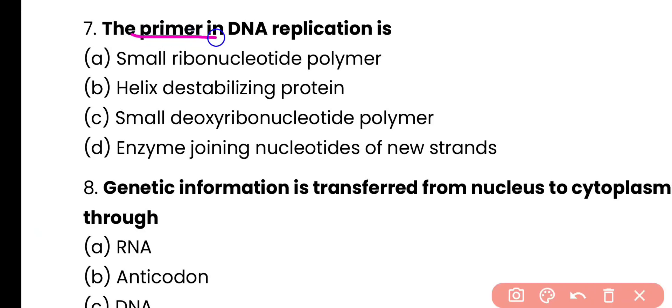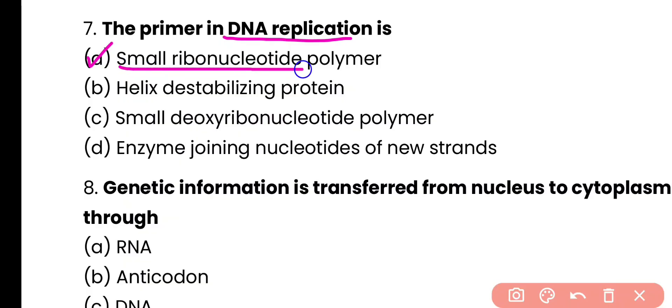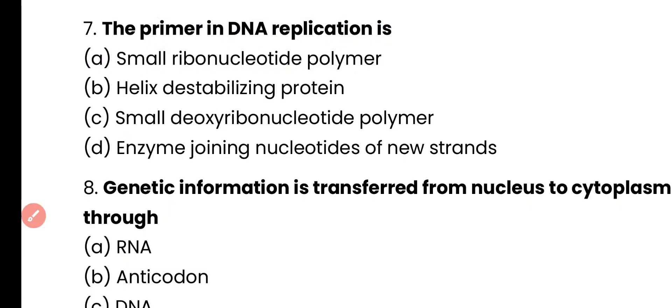Question number 7. The primer in DNA replication is: a small ribonucleotide polymer, helix destabilizing protein, small deoxyribonucleotide polymer, or an enzyme joining nucleotides of new strand? Correct answer is option A. The primer in DNA replication is a short stretch of small ribonucleotide polymer. It is also known as RNA primer and it is essential for the proper functioning of DNA polymerase to initiate DNA replication.